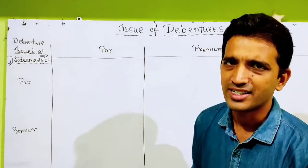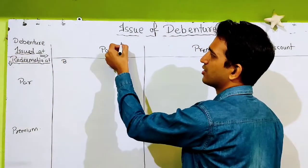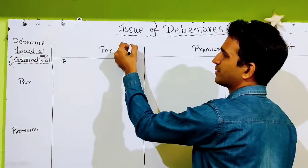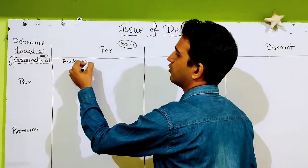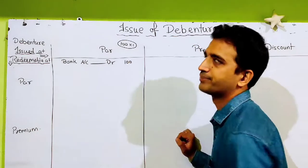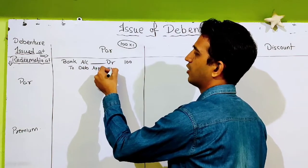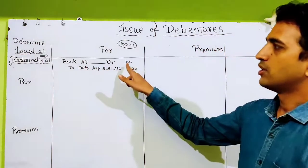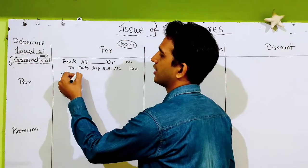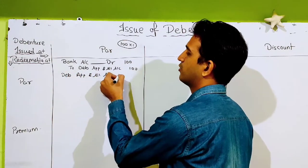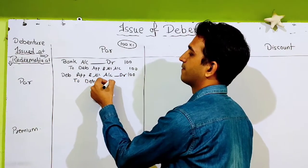सबसे पहले Case 1 करते हैं — debenture issued at par, redeemable at par, सबसे simple case. मान के चलते हैं हमारे पास 100 रुपये का एक debenture है. Entry 1: Bank Account debit 100, to Debenture Application and Allotment Account 100 — पैसे लिए. Entry 2: Debenture Application and Allotment Account debit 100, to Debenture Account 100 — transfer करो.